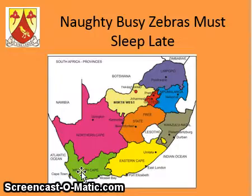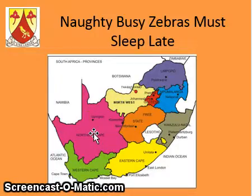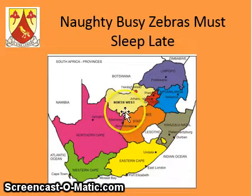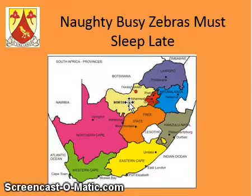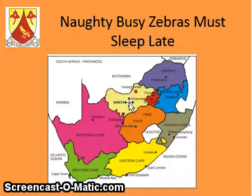Then we've got the Northern Cape, and in the Northern Cape, Kimberley is your capital city. Further up, we've got Northwest Province, and it doesn't actually show the capital city here. The capital city of the Northwest Province is Mahikeng — it used to be Mafikeng, it's now Mahikeng.